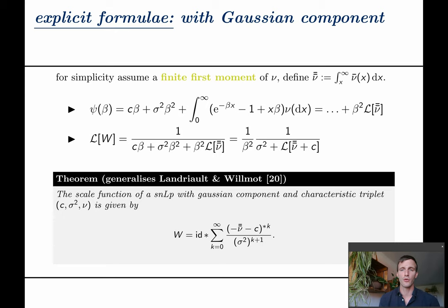Next if a Gaussian component is present and we assume jumps with finite first moment we can write the Laplace exponent like that and here we again used Fubini this time twice and double bar ν is the tail of the tail of the Lévy measure.